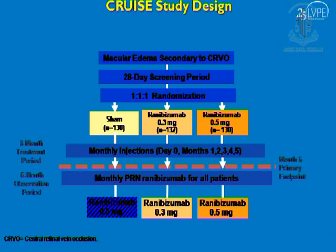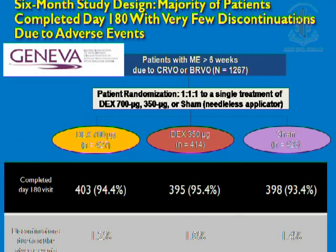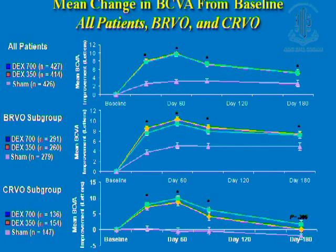There are studies showing promising results with anti-VEGF agents in CRVO. Even steroids, mainly the Ozurdex implant, also show good improvement. However, looking at comparative data, the BRVO group performs better than the CRVO group. This fact you need to remember while handling patients in the clinic.